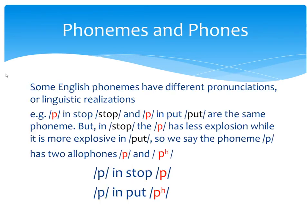Some English phonemes have different pronunciations or linguistic realizations. For example, the phoneme P in 'stop' is pronounced with less aspiration — we say 'stop' — while the phoneme P in 'put' is pronounced with high aspiration — we say 'put'. So in 'stop' the P has less aspiration, while it is more aspirated in 'put'. In this way, we say that the phoneme P has two allophones, or two linguistic and phonetic realizations, which are the unaspirated P and the aspirated P.